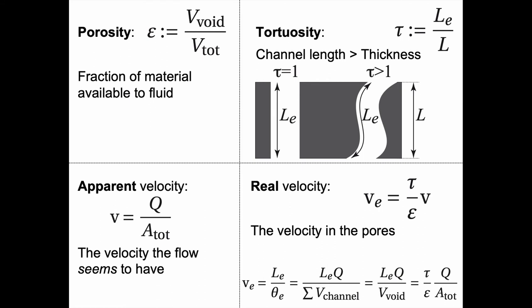Another way to think of that is to say that the velocity in the pore must be the effective length of the pore divided by the residence time in the pore. But the residence time in the pore is the volume of the channel divided by the volumetric flow. Then you get ve = (τ/ε) × (Q/Atot). But that's the apparent velocity.